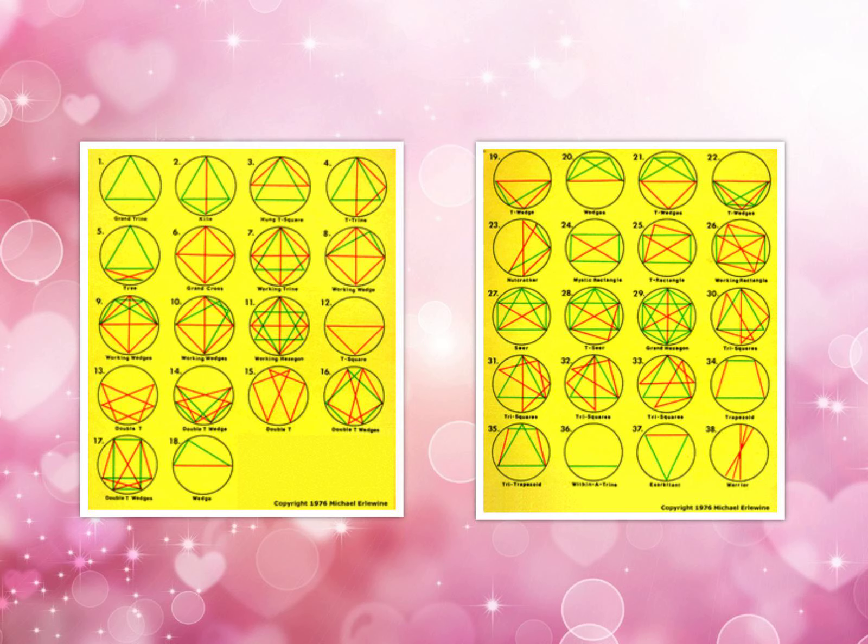One of the key factors identified in really good synastry, either for romantic relationships or friendships and other significant relationships, is the mutual completion of geometric aspect patterns in synastry.